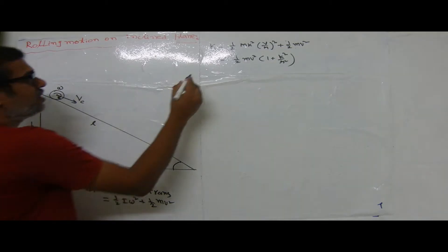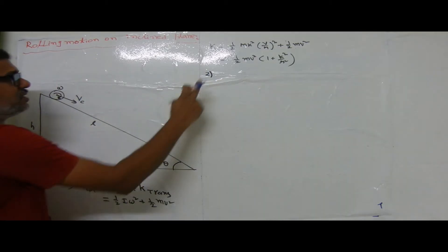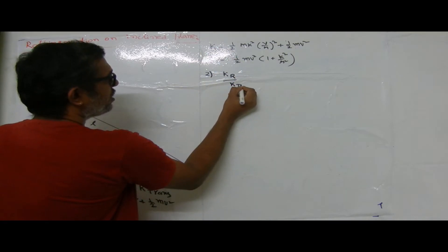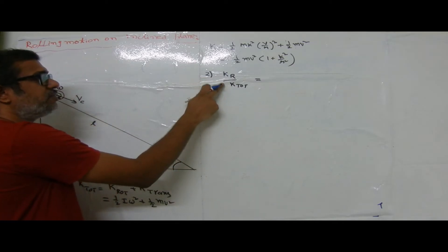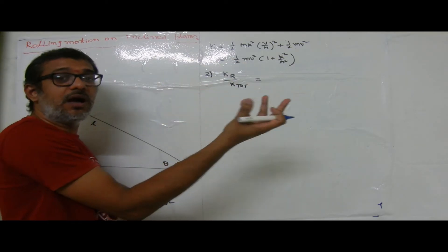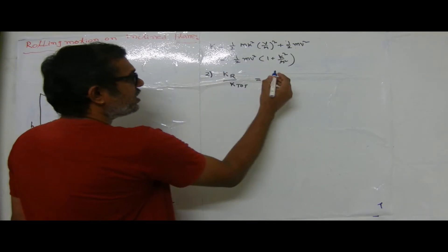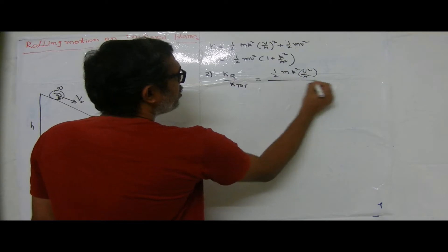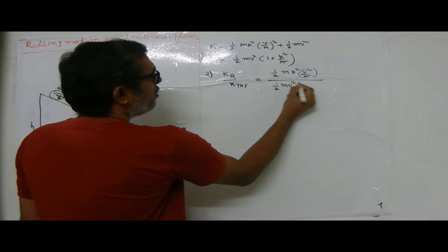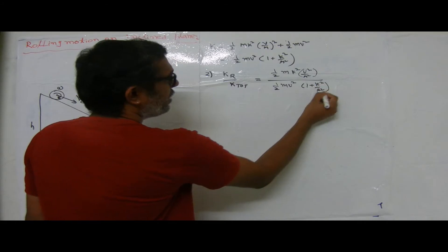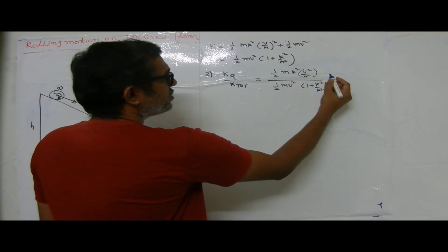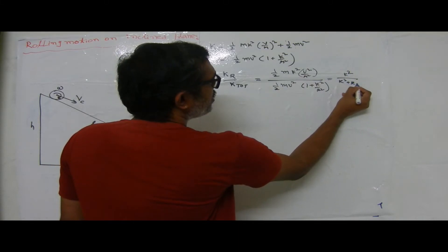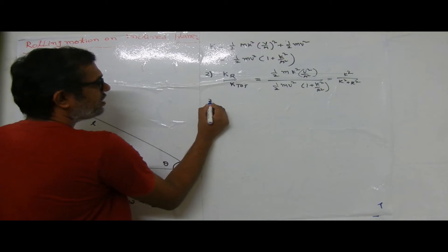The second application is finding the fractional value of rotational kinetic energy over total kinetic energy. This ratio equals (½m k² v²/r²) divided by (½mv²(1 + k²/r²)). Canceling like terms, the final answer is k² divided by (k² + r²).